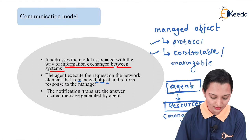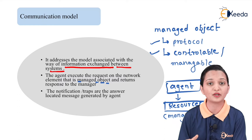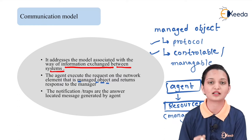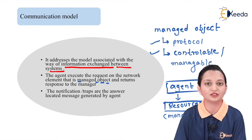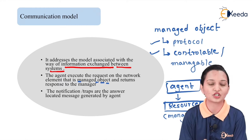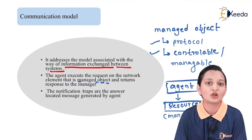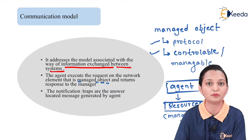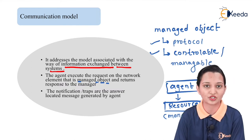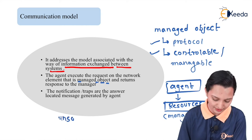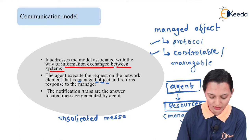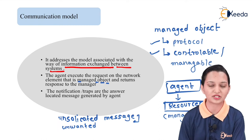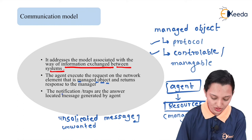Notifications and traps are unsolicited messages generated by the agent. For example, after completing a call we get a notification from the agent about our recharge or balance duration. Sometimes these notifications are useful reminders to recharge a SIM card, but sometimes they may not be useful — they can be irritating. Such notifications are also known as unsolicited, meaning unwanted, messages.